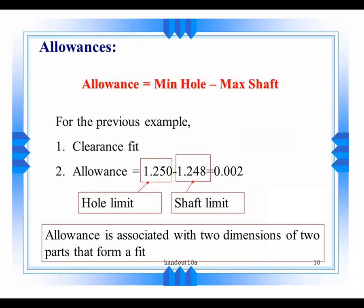One more slide for allowances. Allowances are the minimum hole and maximum shaft. It means minimum dimension of hole, inside diameter, and maximum or outside diameter of shaft. In the previous example, we studied that allowance can be calculated: 1.250 minus 1.248, which is 0.02. So allowance is associated with two dimensions of two parts that form a fit.